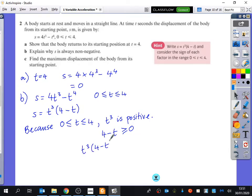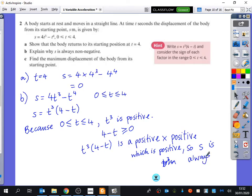So overall, t cubed multiplied by 4 minus t is a positive multiplied by a positive, which is positive. So s is always non-negative.